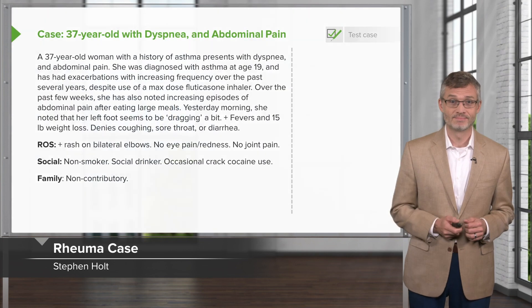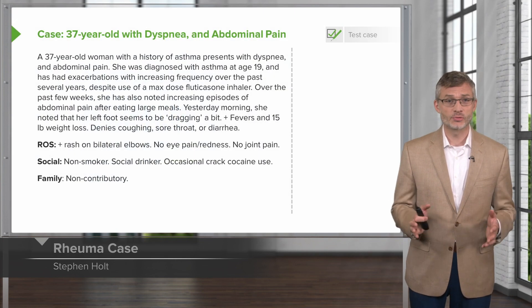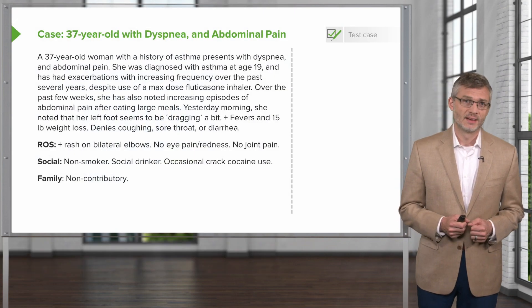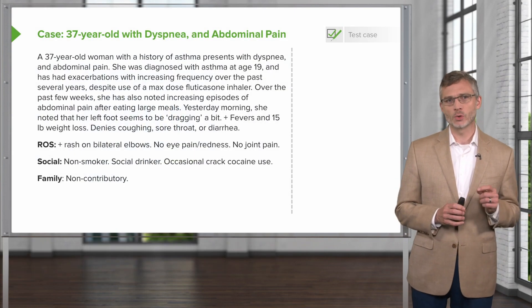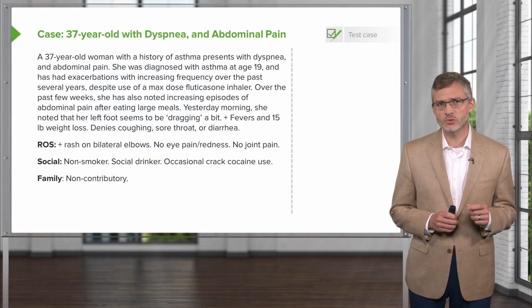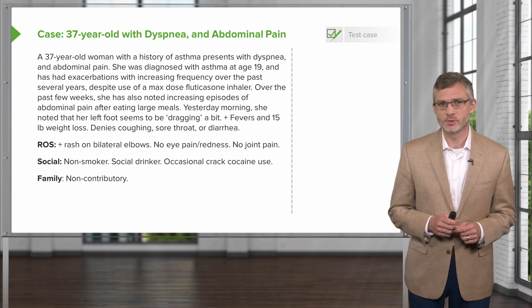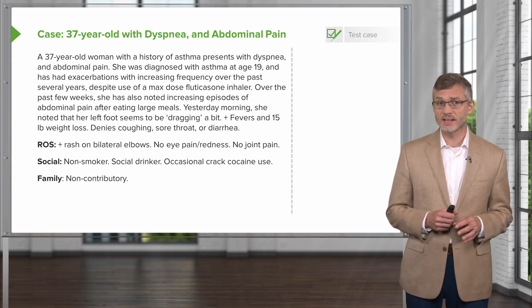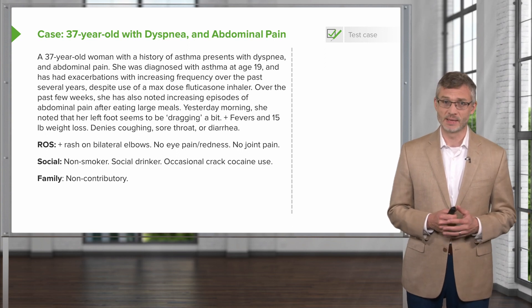All right, today we're going to cover a big topic: vasculitis. Let's go through a case. A 37-year-old woman with a history of asthma presents with dyspnea and abdominal pain.